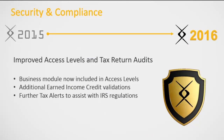Now, to talk about improvements to security and our tax return audits — we're always looking to improve those things even throughout tax season. This year we've included the business module along with access levels so you can lock certain preparers out of business returns. Additional EIC validations and tax alert validations have been included to ensure we're all adhering to IRS due diligence requirements. We've also included stronger enhanced encryption when you install the program, helping preserve all the personal data gathered from taxpayers.